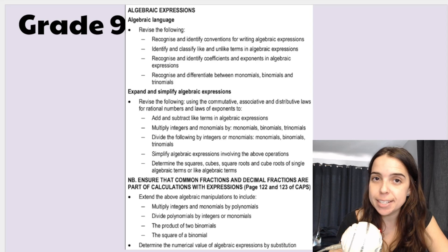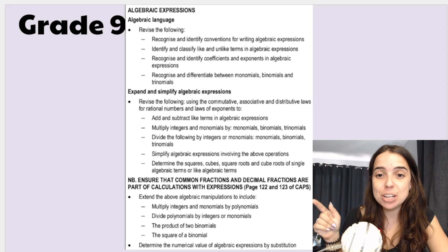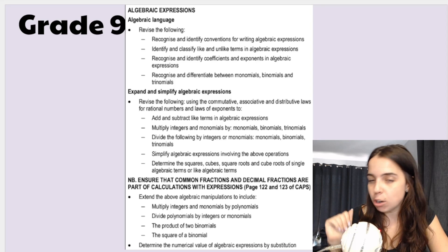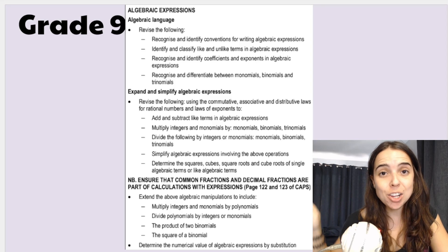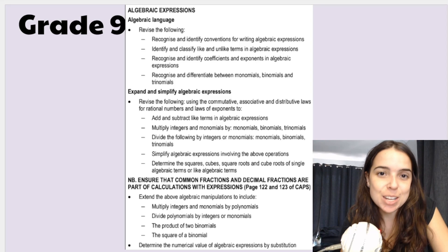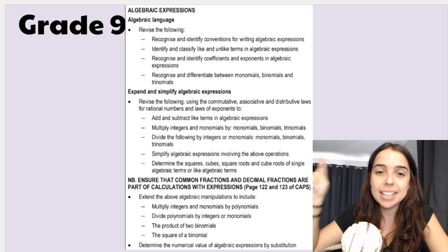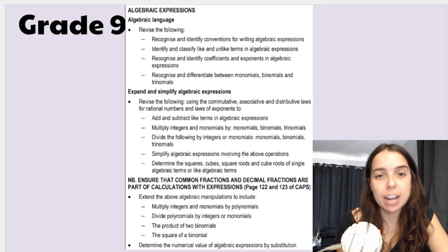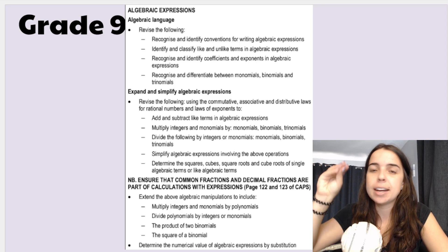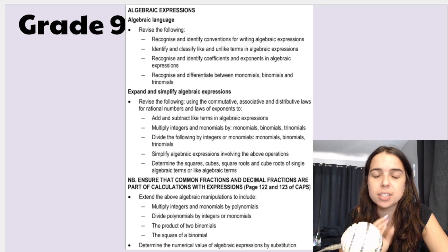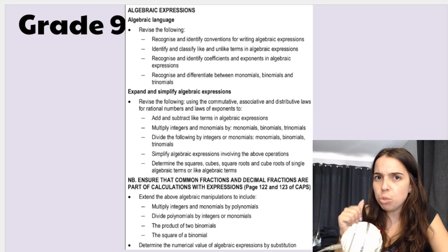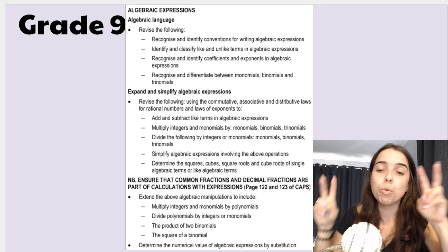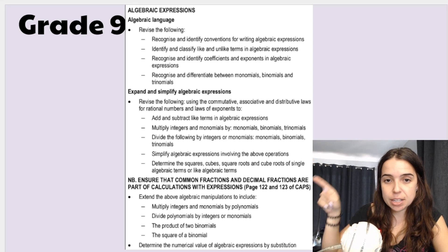Grade 9 learners — if your teachers follow the ATPs, you'll be starting off with algebraic expressions. Remember, your teachers may not follow this plan, so check with them. Now this is a very algebra-heavy term, and you start off with algebra as a language, revising things from grade 8. So it's very important that you still have those books. Go over add and subtract like terms, monomials, binomials, trinomials, understanding coefficients — all those things. Something you'll be focusing on a lot in grade 9 is the distributive law and also what many teachers call FOIL or expanding.